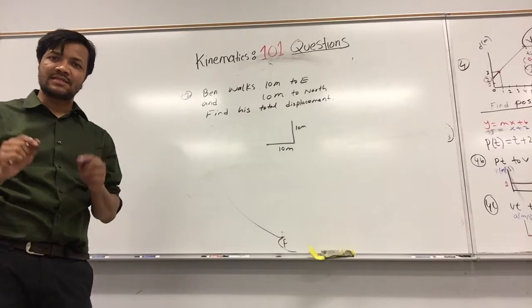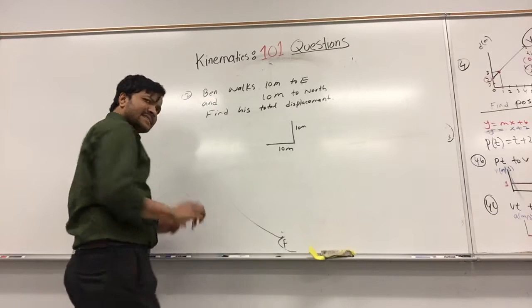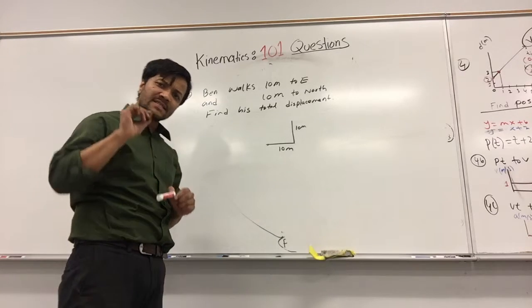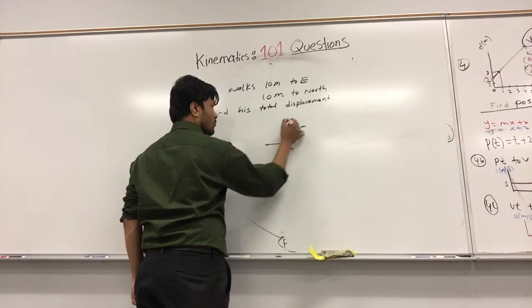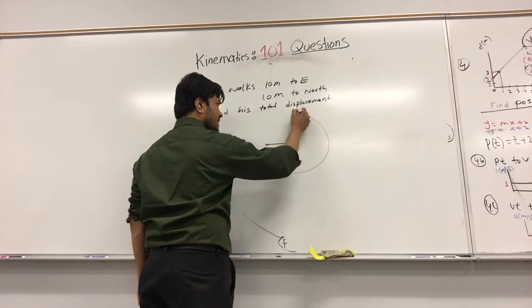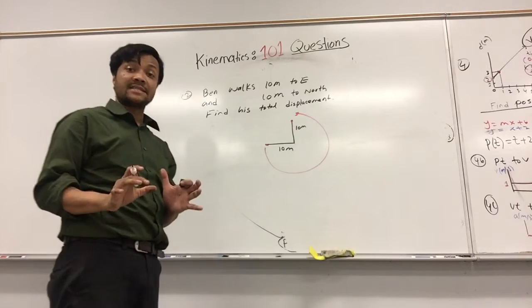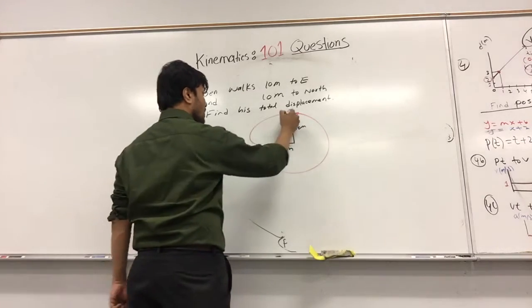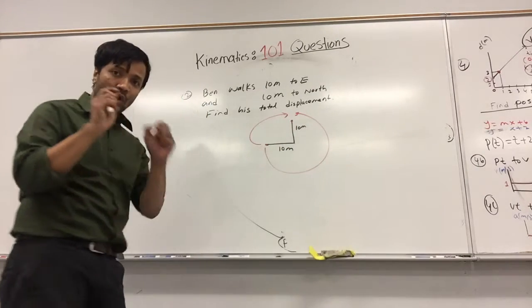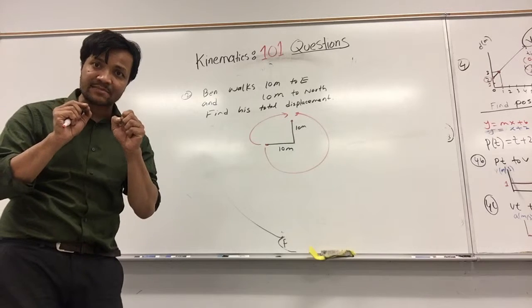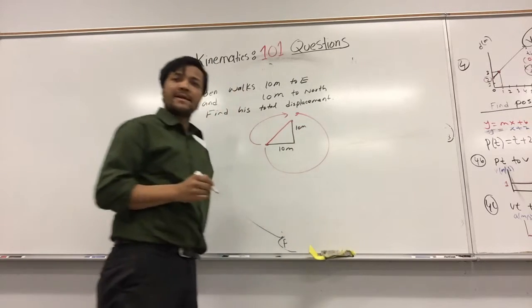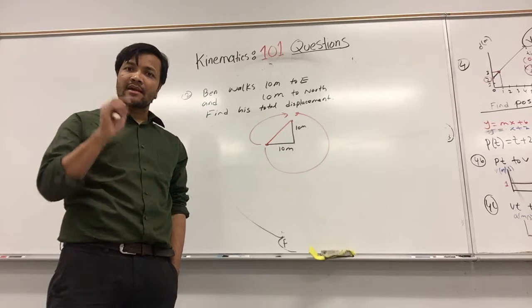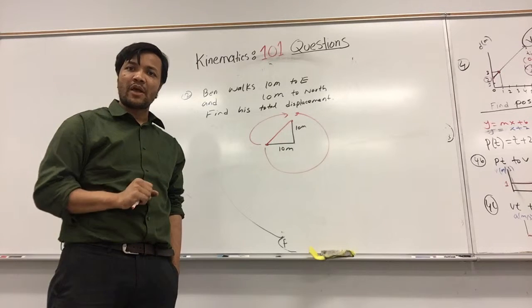Total displacement is the shortest distance between two points. I have one point here and one point here. The shortest distance between these two points is a diagonal line.